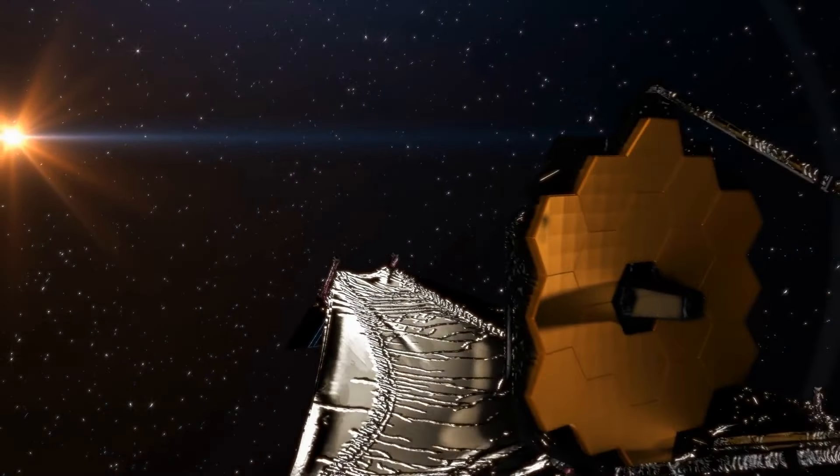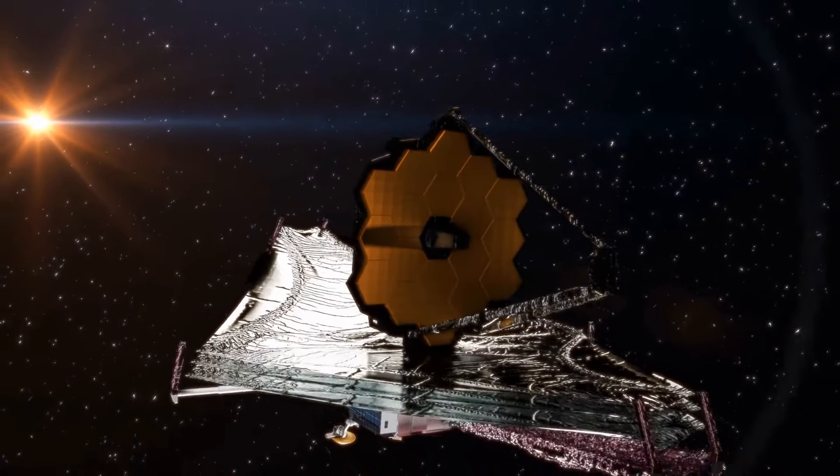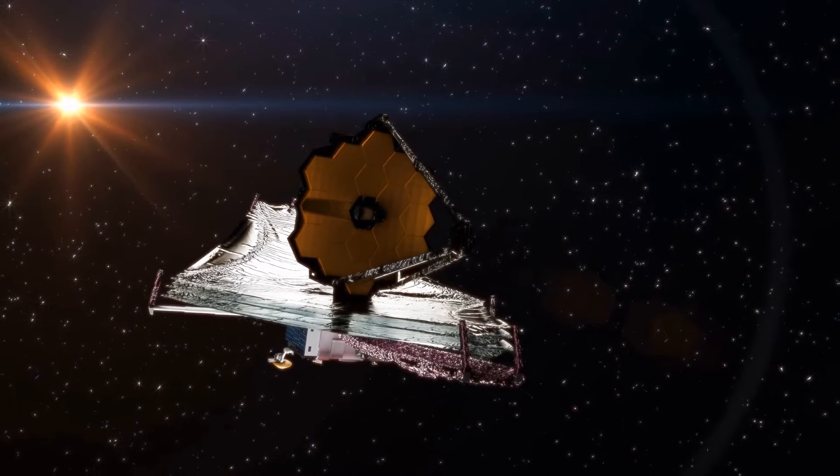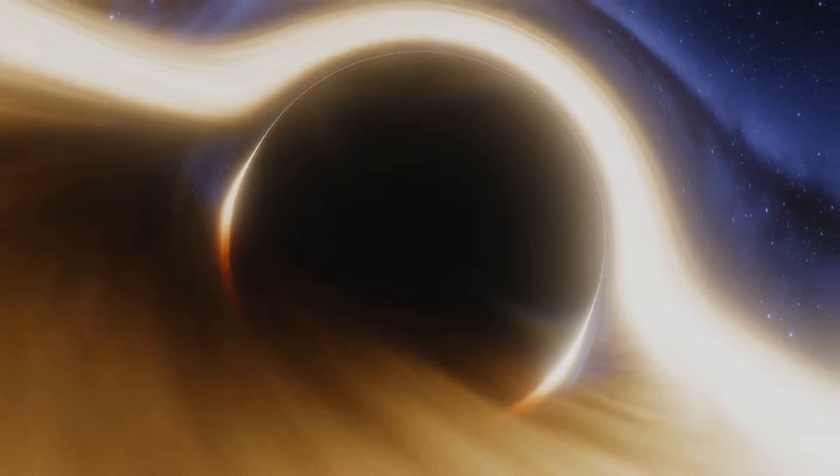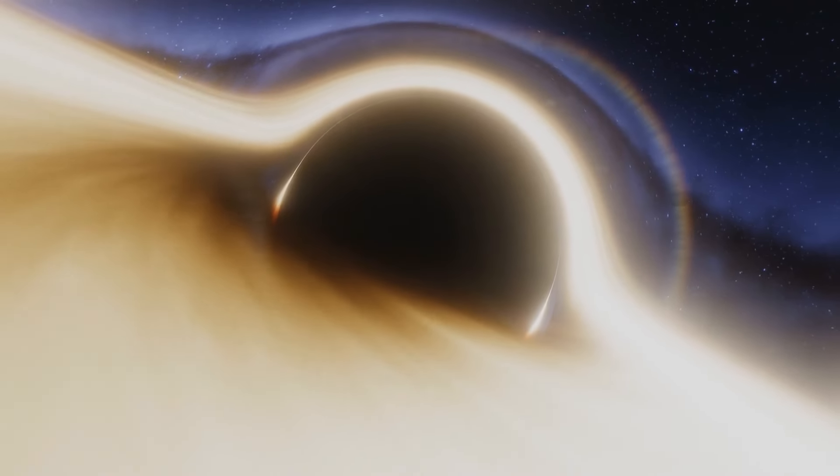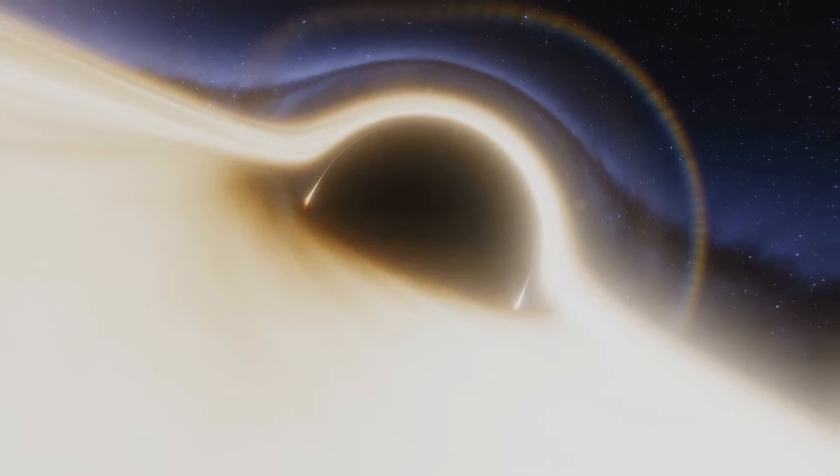The James Webb Space Telescope has recently discovered the oldest black hole ever found. It's an ancient monster as massive as 1.6 million suns, and it's lurking 13 billion years in the past at the center of an infant galaxy.